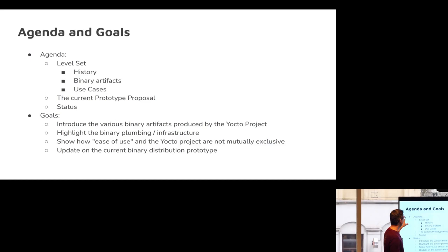What I was going to cover in this one is a little level set on the history of binary artifacts, what we call binary artifacts in the Yocto Project open embedded world, and then talk about the things that are produced, highlighting the plumbing and infrastructure and how that relates to ease of use. The goal would be to make an easier on-ramp to the Yocto Project for hobbyists or somebody who needs to try out a board, get something booting, and then we can get them into the project.